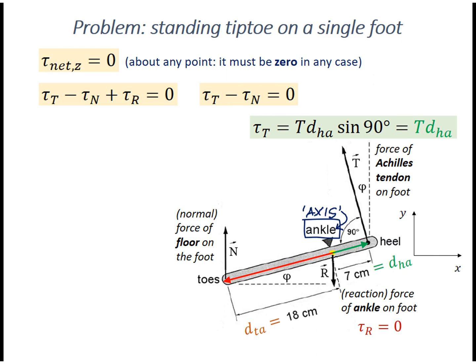And this bright red vector is the radius for the normal force. That torque can be written as the perpendicular component of the normal force to the foot, which is N cosine phi, times d sub ta, which can also be thought as N times its lever arm, d sub ta cosine phi. This torque is in the opposite direction, that is, into the page.